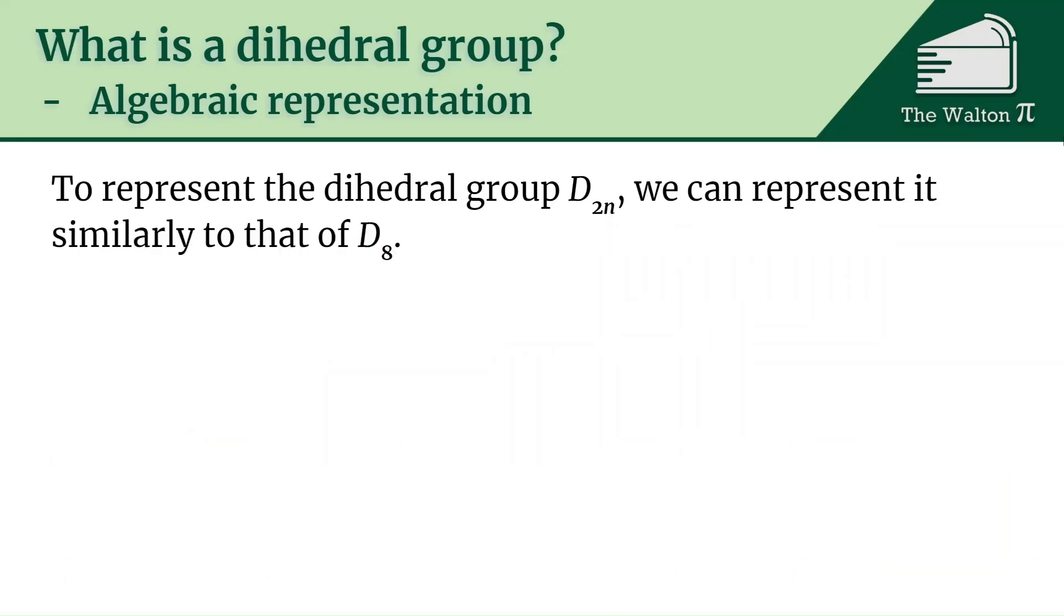To represent the dihedral group D_{2n}, we can represent it similarly to D_8. We let e be the identity and then D_{2n} is the group generated by r and d, where r to the n equals d squared equals e, and then dr is r inverse d.